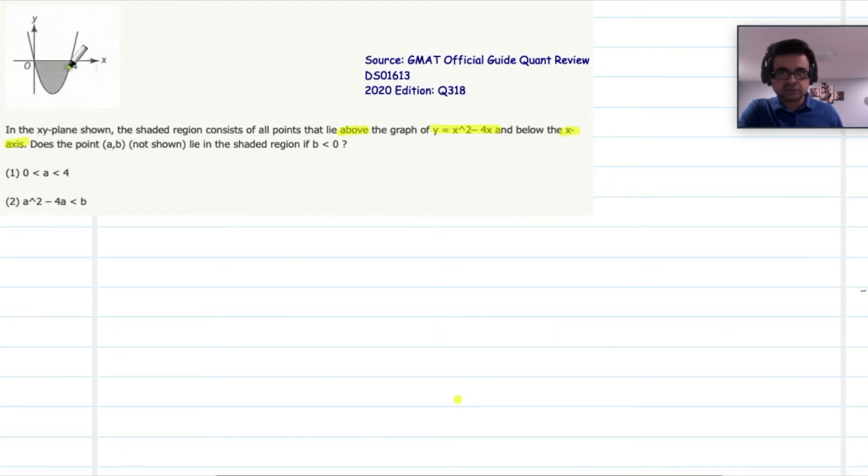The curve is y equals x squared minus 4x and also below the x-axis. So there is a shaded region. As you can see here, it is below the x-axis and the curve that bounds this shaded region is y equals x squared minus 4x.